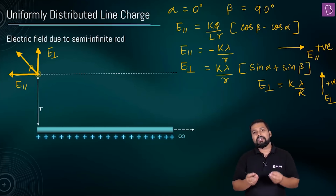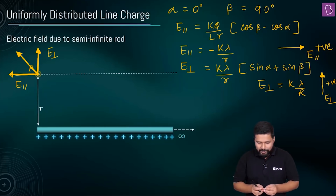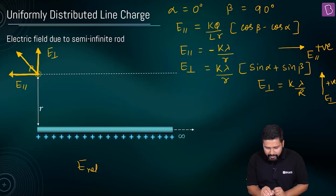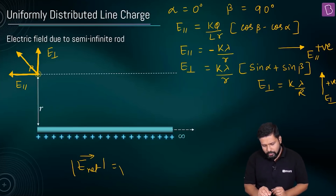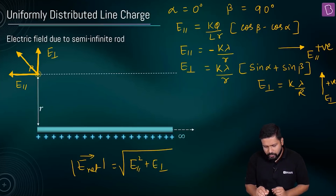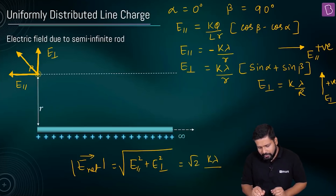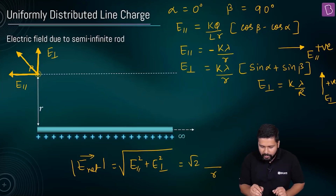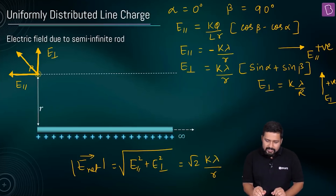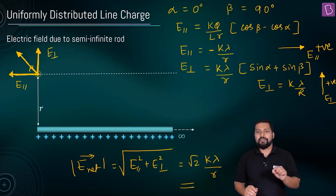The magnitude of the net electric field is: E_net = √(E_parallel² + E_perpendicular²). Substituting the values, since both components are equal in magnitude (kλ/r), we get E_net = √2 · kλ/r. This result is very, very important.